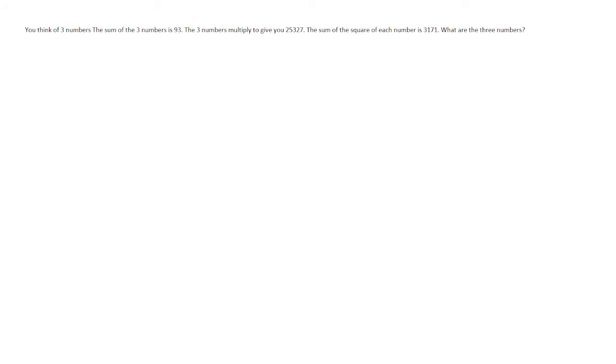You think of three numbers. The sum of the three numbers is 93. The three numbers multiply to give you 25,327. The sum of the square of each number is 3,171. What are the three numbers?